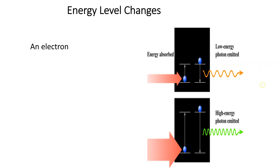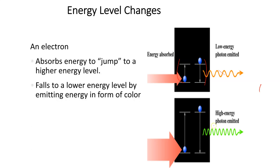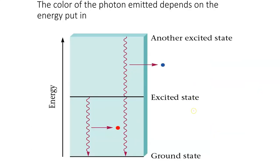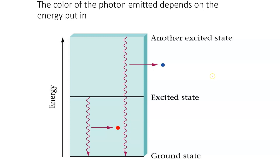Looking at these energy level diagrams: going from one shell to an adjacent shell is not much of a jump and produces an orange color — low energy. Going a bit further, look at how much farther this jump goes compared to the first — it produces green, a more energetic color. In another example, going up one shell produces red; going up what looks like two shells but look at the actual distance — it produces blue.